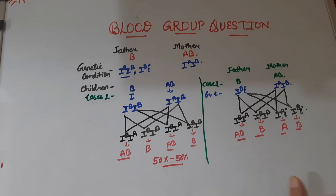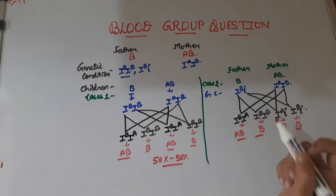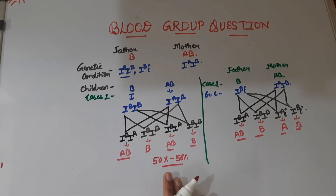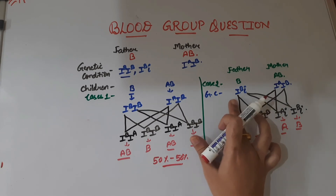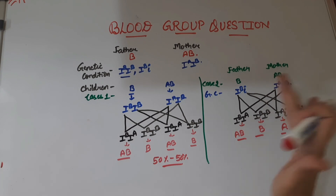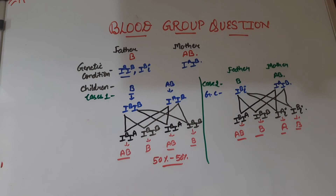For objective questions where you only need an answer without showing working, do not go for Case 1 because it does not give you all the possibilities. Always go for the heterozygous condition, because a heterozygous condition gives you the maximum output. So if a father has blood group B and a mother has blood group AB, the maximum possibilities we can see in children are AB, B, and A.